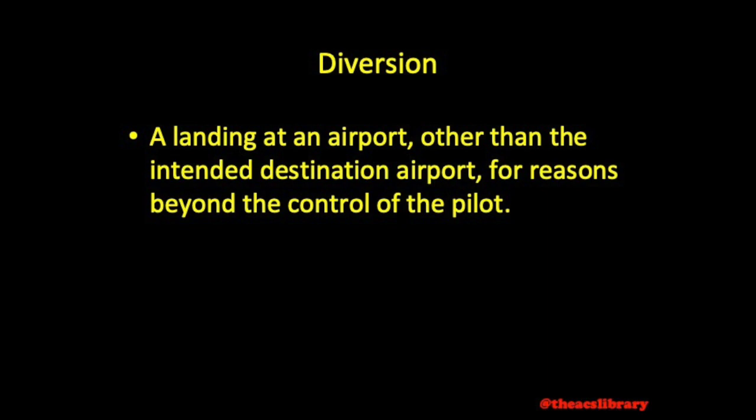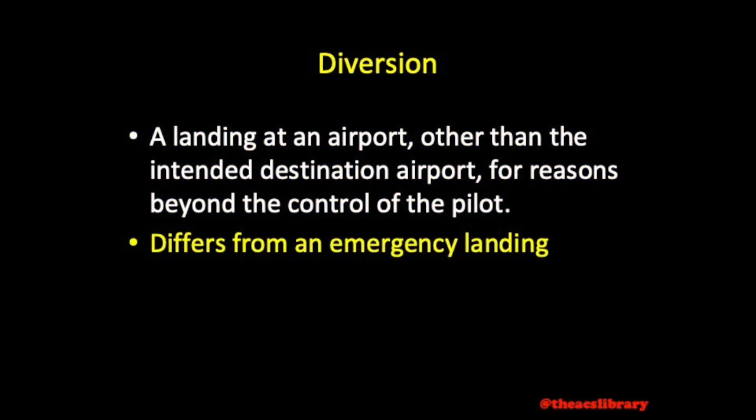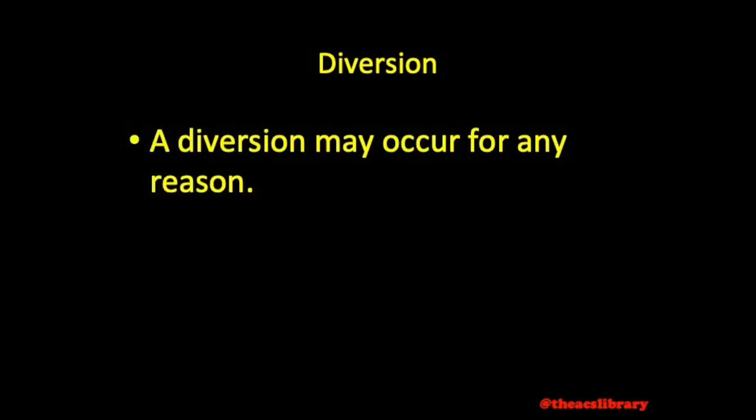A diversion may result from an in-flight emergency, but differs from an emergency landing in that a diversion is a result of precaution and involves some in-flight planning to an airport, while an emergency landing is often performed immediately out of necessity and may or may not result in an off-airport landing. A diversion may occur for any number of reasons — cattle stampede on the runway, tornadoes up ahead, or maybe just a better menu at another airport's restaurant.